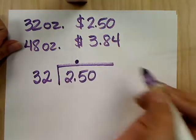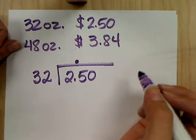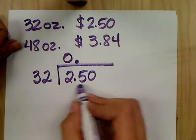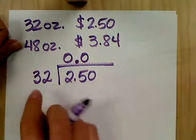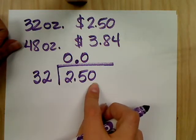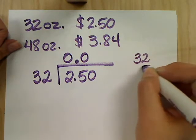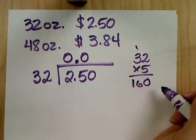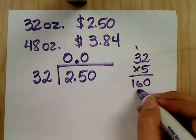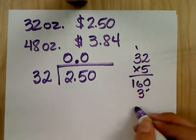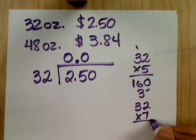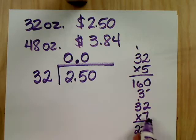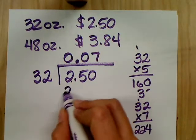Okay, first thing, bring my decimal up into my answer so I don't forget. How many times does 32 go into 2? Zero. Good, zero times. 32 into 25? Zero. Also zero. How about 32 into 250? Let's try 5. 32 times 5. 5 times 2 is 10, 5 times 3 is 15, plus 1 is 16. Can we try another time? Let's try 7. 32 times 7. 7 times 2 is 14, 21 plus 1, 22. Much better. So 7 times, put my answer up there, and that's 224.